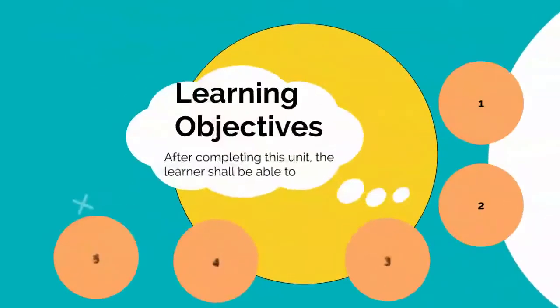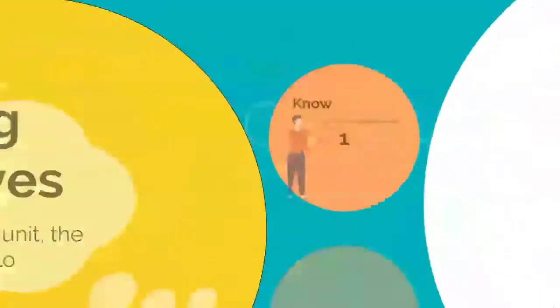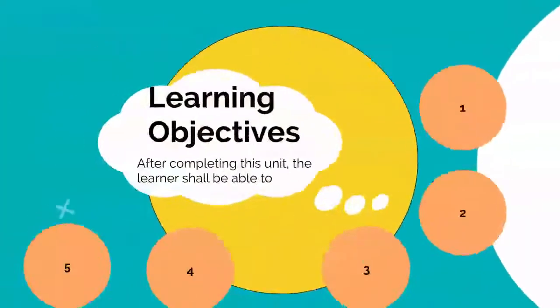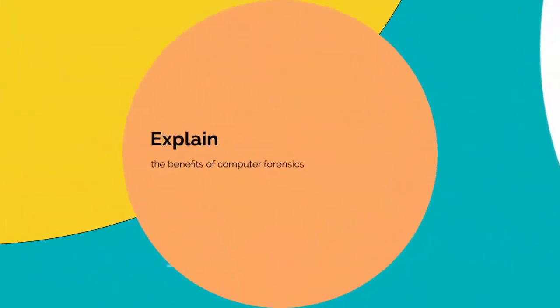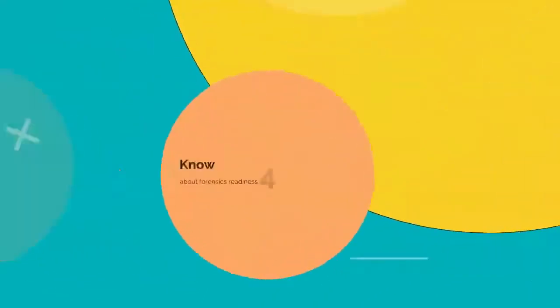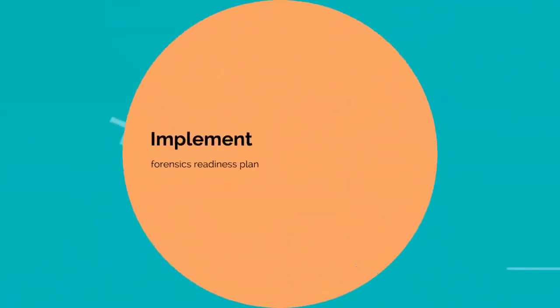The learning objectives are: after completing this unit, the learner shall be able to know the history and evolution of digital forensics, describe various types of cybercrime, explain the benefits of computer forensics, know about forensics readiness, and implement a forensics readiness plan.